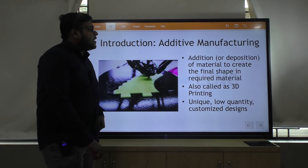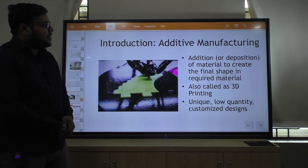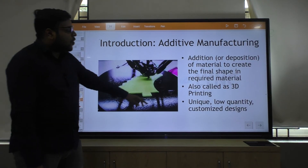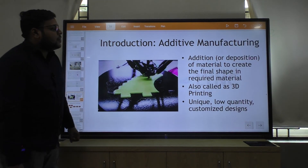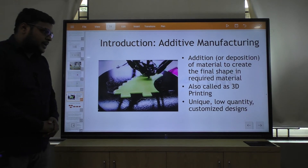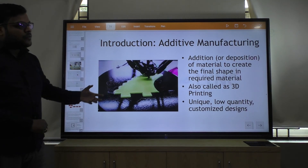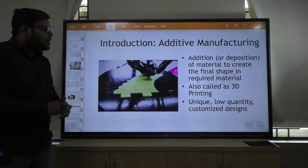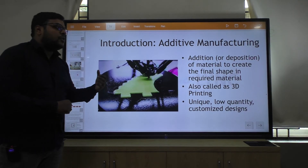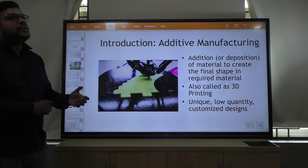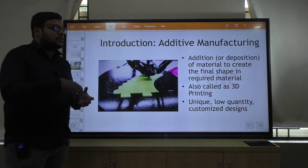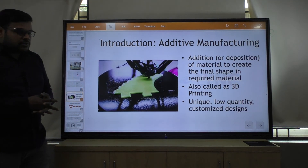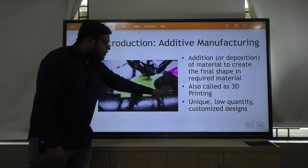Next, additive manufacturing — the addition or deposition of material to create the final shape in the required material, also called 3D printing. It is unique for low-quantity, customized design. We can create whatever design we want by the help of 3D printing. Whenever we want to edit a component, we can easily do so through the CAD model by changing dimensions to get the final product.